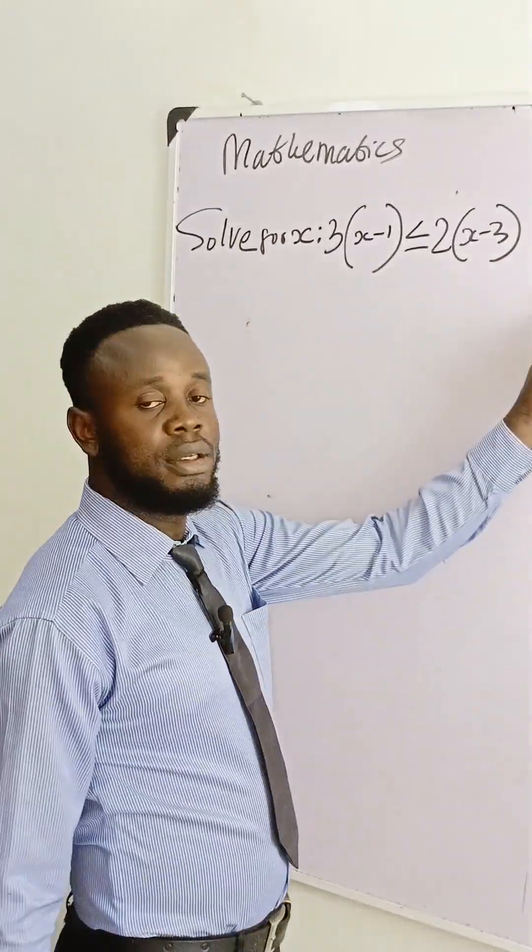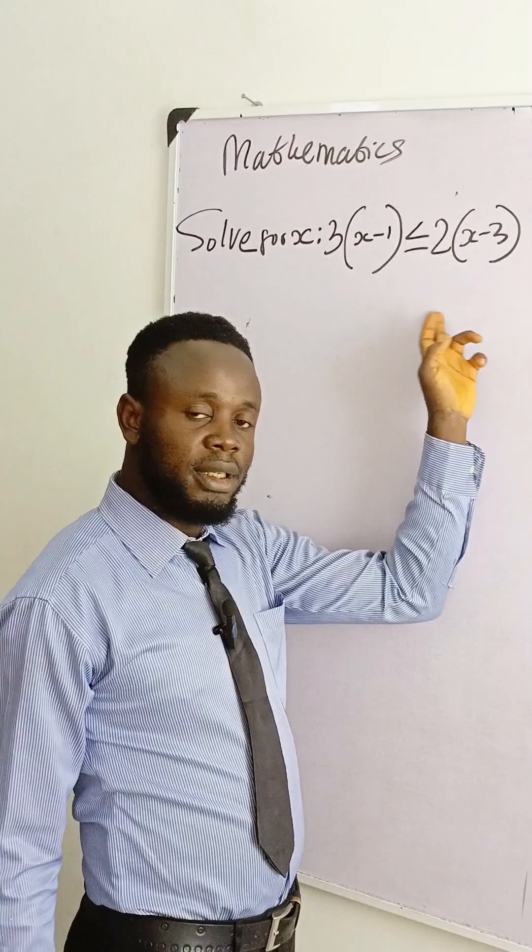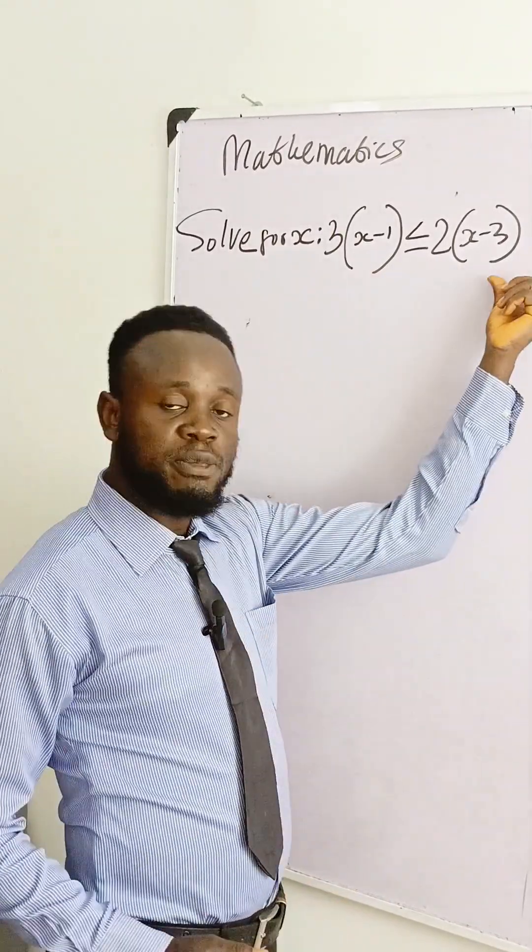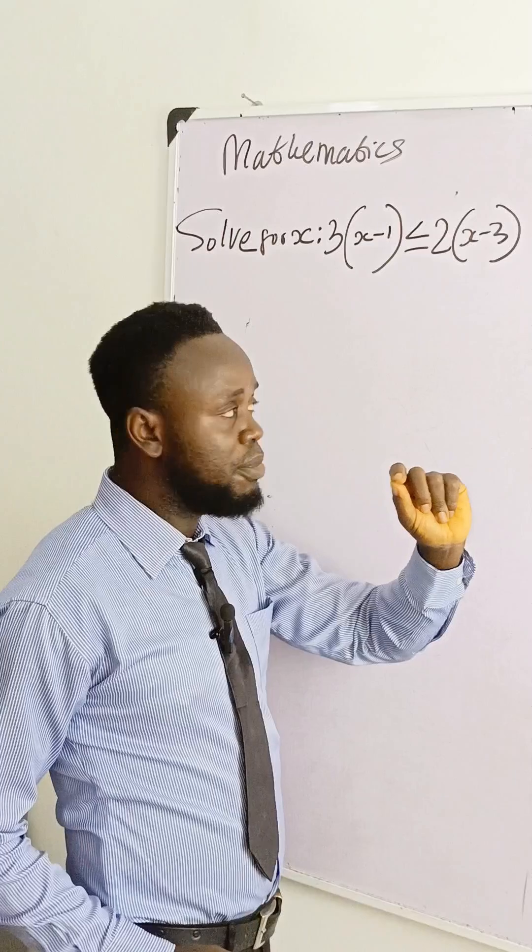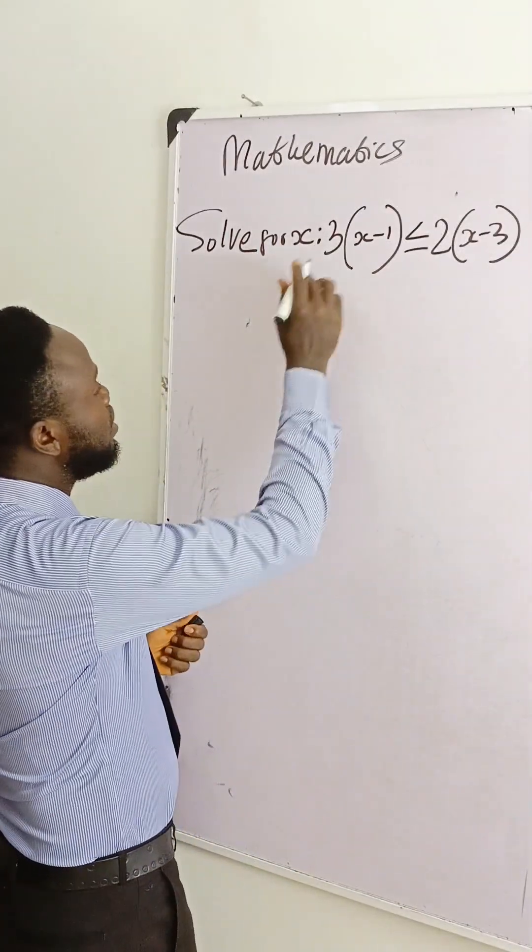This is an inequality. So we are solving for x in this question. We have this bracket here, so the first step is opening the bracket at both sides. So if we do that...